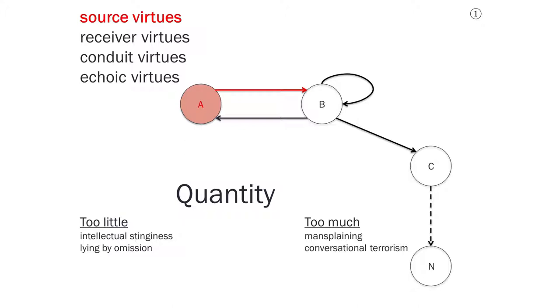Someone who says too much, who says things that they do happen to know to be true, but which are more than this hearer needs to know, might engage in things like mansplaining or what is sometimes called conversational terrorism. Whereas someone who gives too little might be described as intellectually stingy or even as lying by omission.